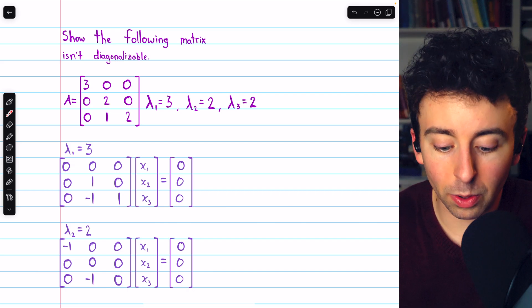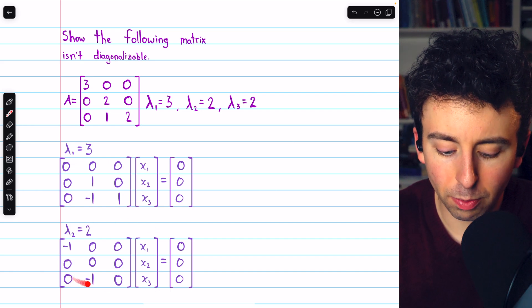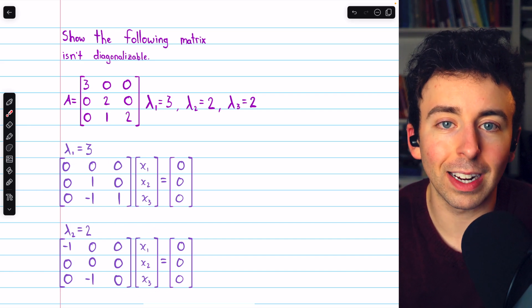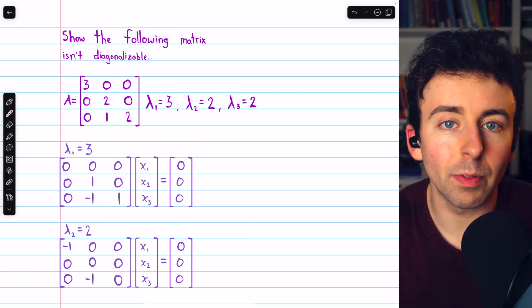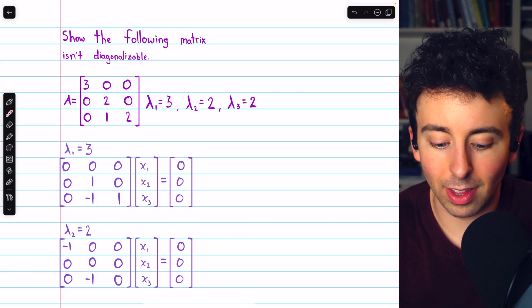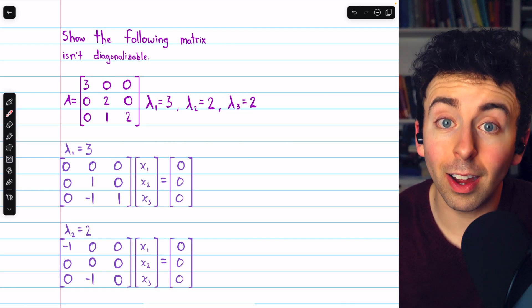So I know that the solution space to this system has one basis vector, and the solution space to this system has one basis vector. Those basis vectors are linearly independent eigenvectors. So I know that this matrix has two linearly independent eigenvectors, not three.